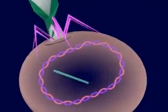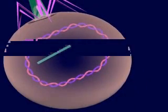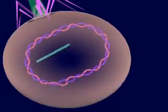The empty coat remains outside the cell. Inside the cell, the viral DNA breaks down the host cell's DNA.